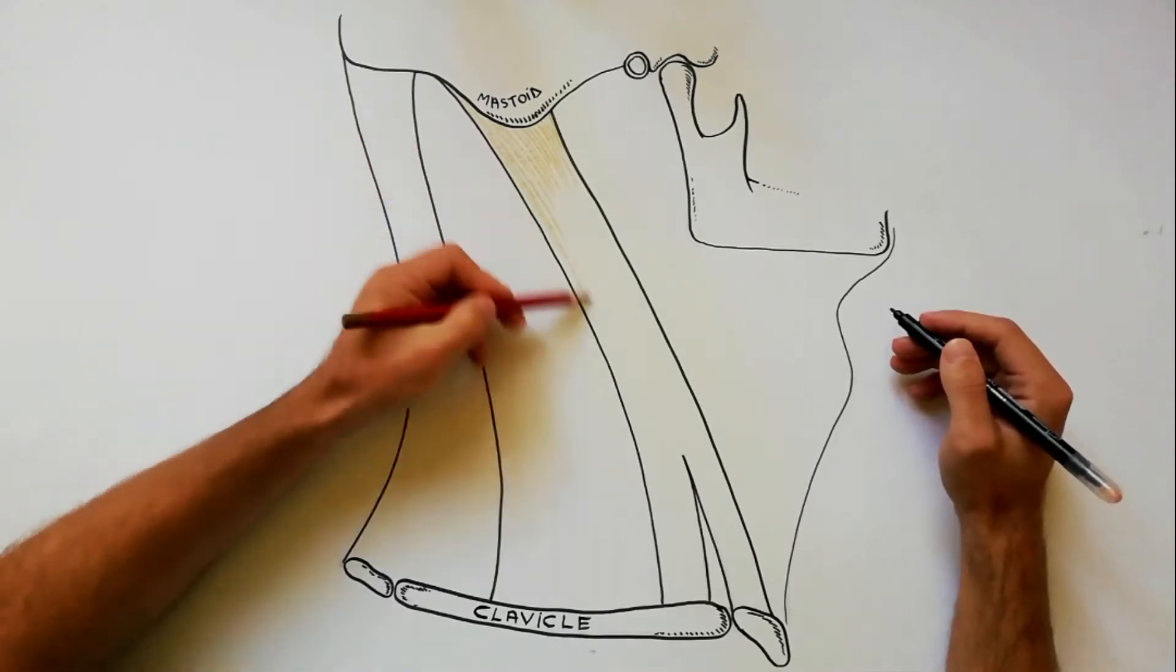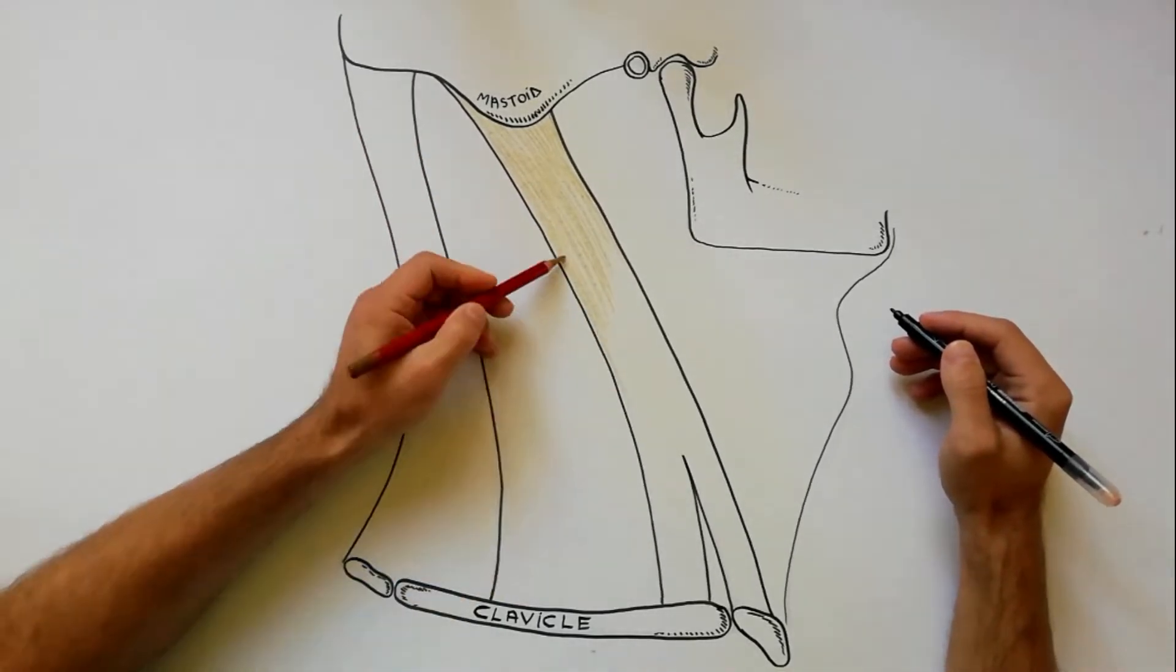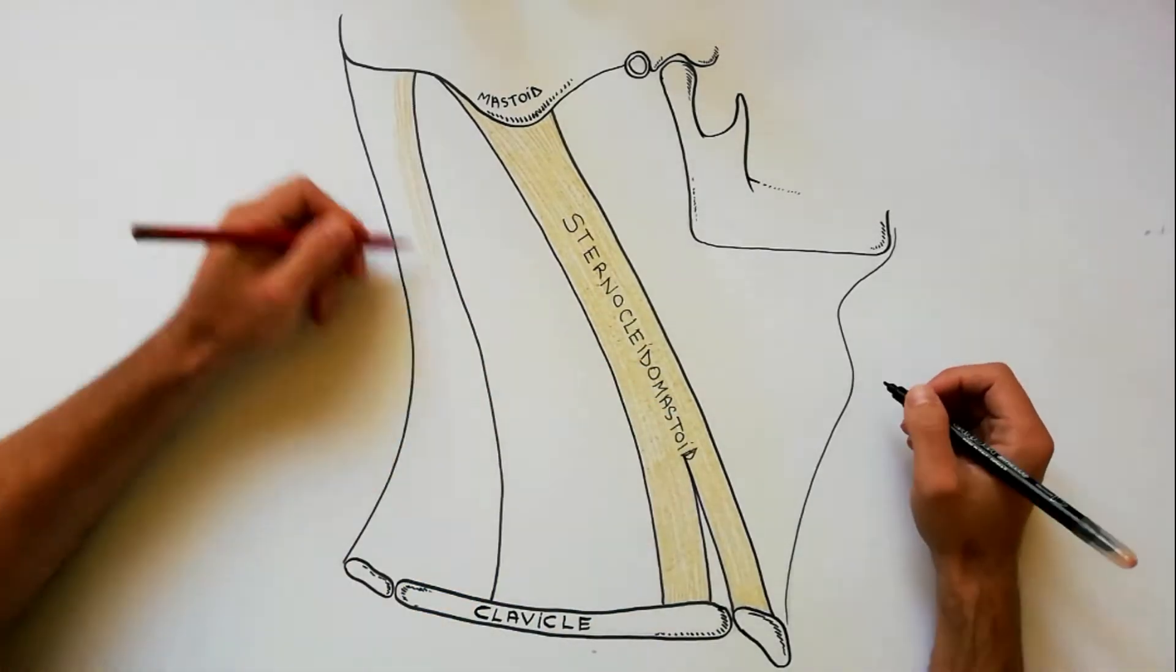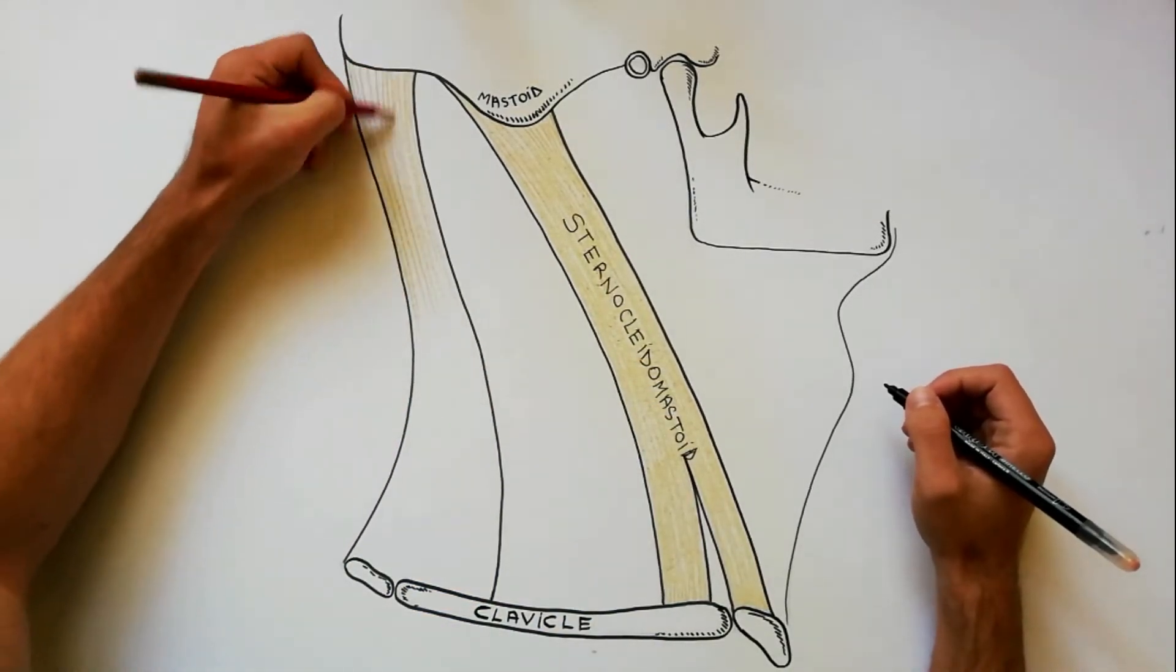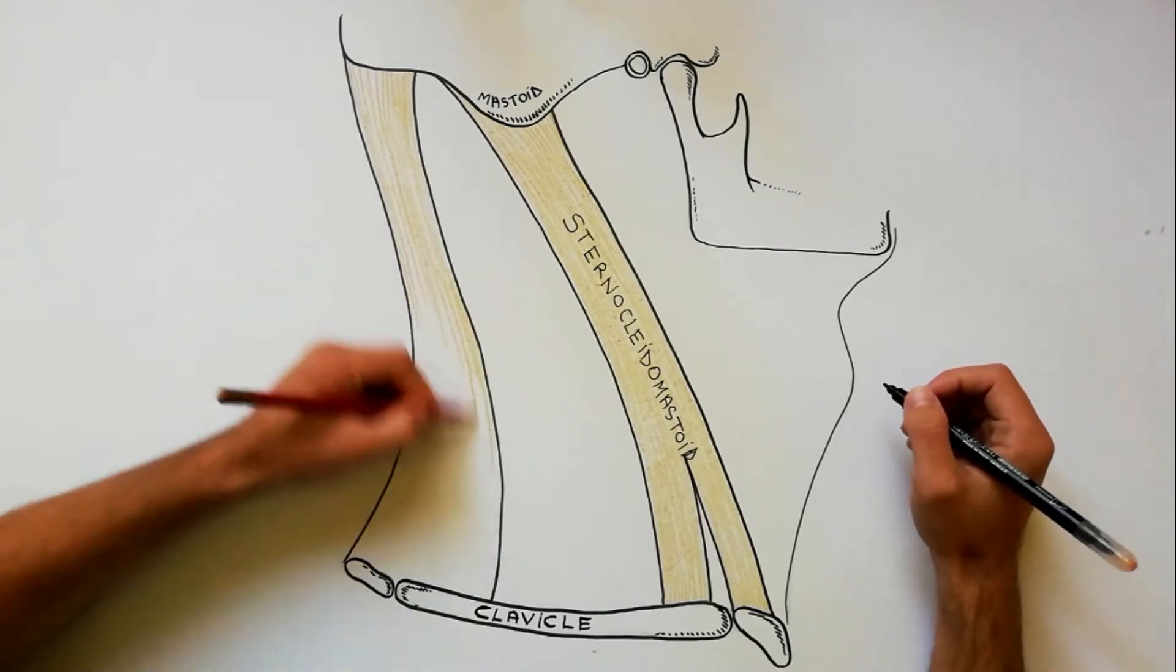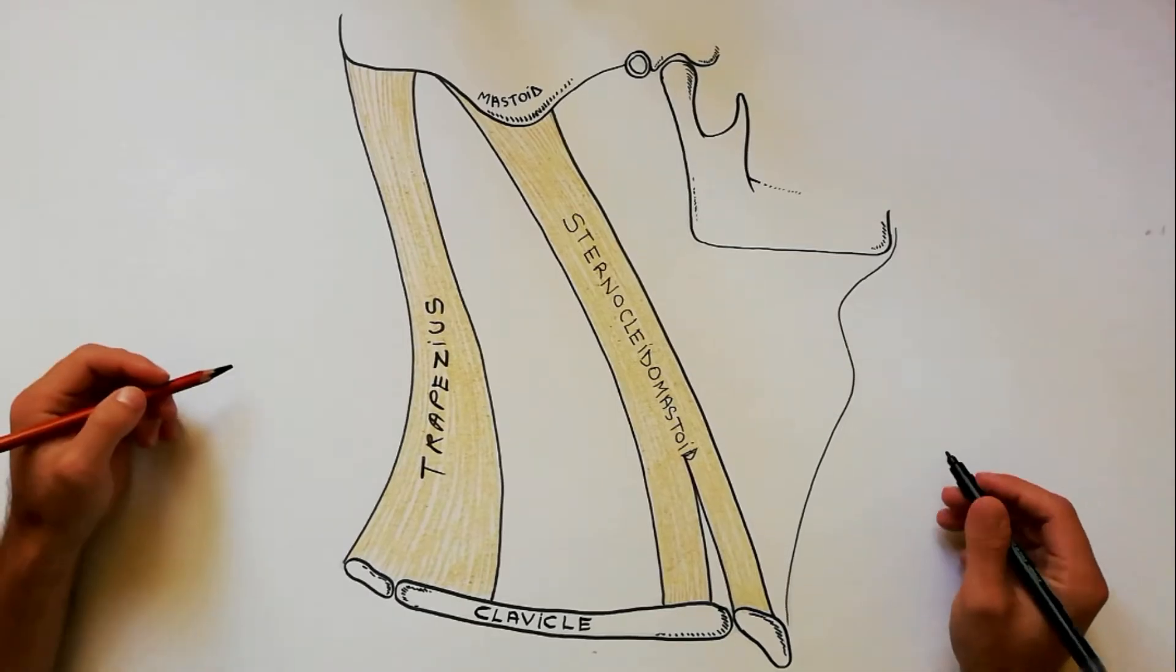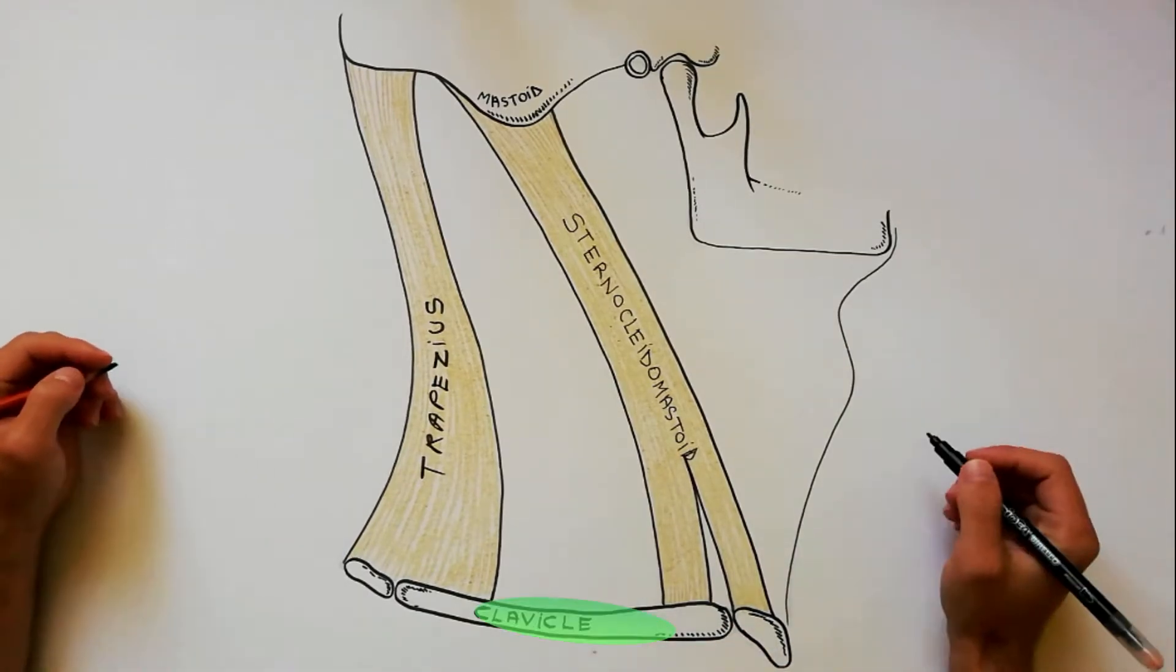Boundaries: Anterior is bounded by the posterior border of sternocleidomastoid muscle. Posterior is the anterior margin of trapezius muscle. Inferiorly is bounded by the superior aspect of middle third of the clavicle.